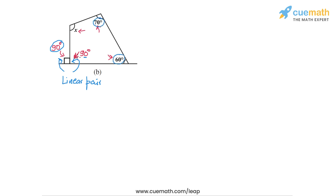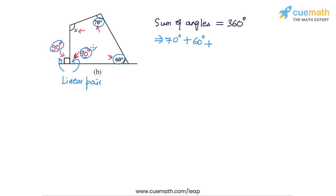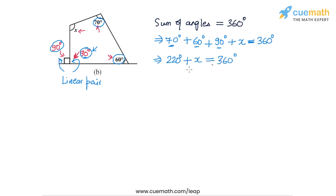So we now have three of the four angles of the quadrilateral known: 70 degrees, 60 degrees, and 90 degrees. Using the angle sum property, 70 plus 60 plus 90 plus x equals 360 degrees. Now 70 plus 60 is 130, and 130 plus 90 is 220. So 220 degrees plus x equals 360 degrees, which gives us x equals 360 minus 220, which is 140 degrees. The measure of x in part b is 140 degrees.